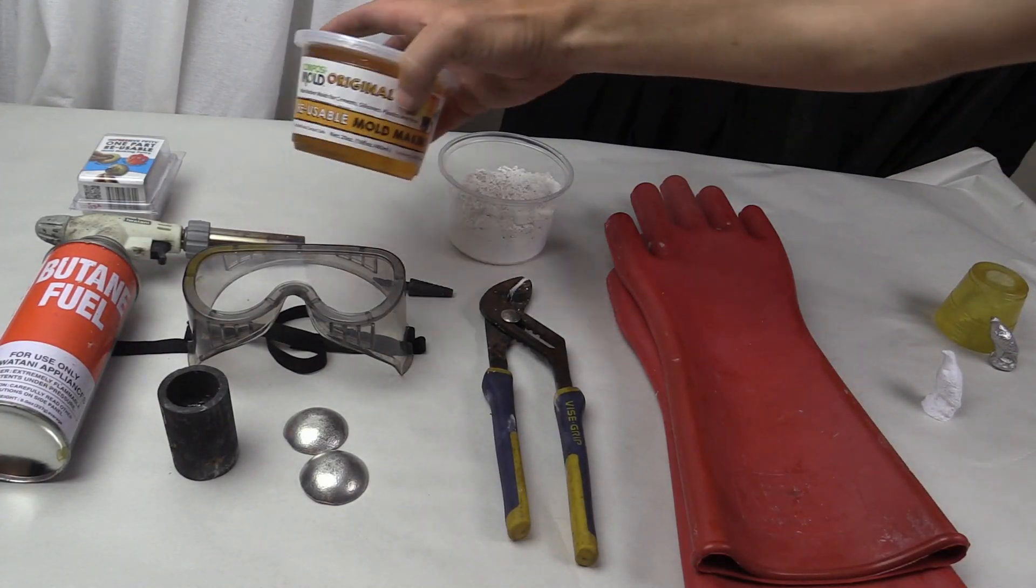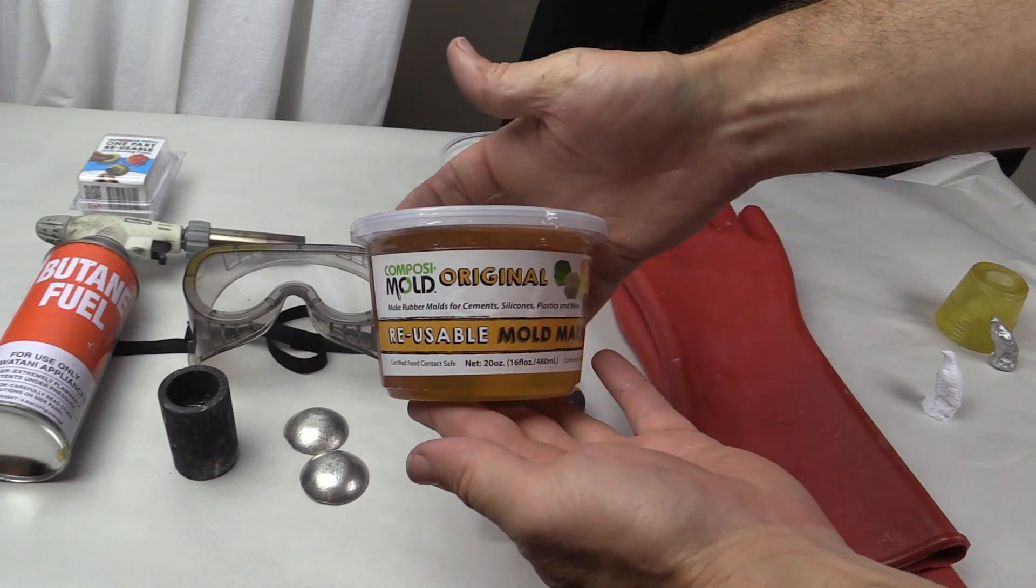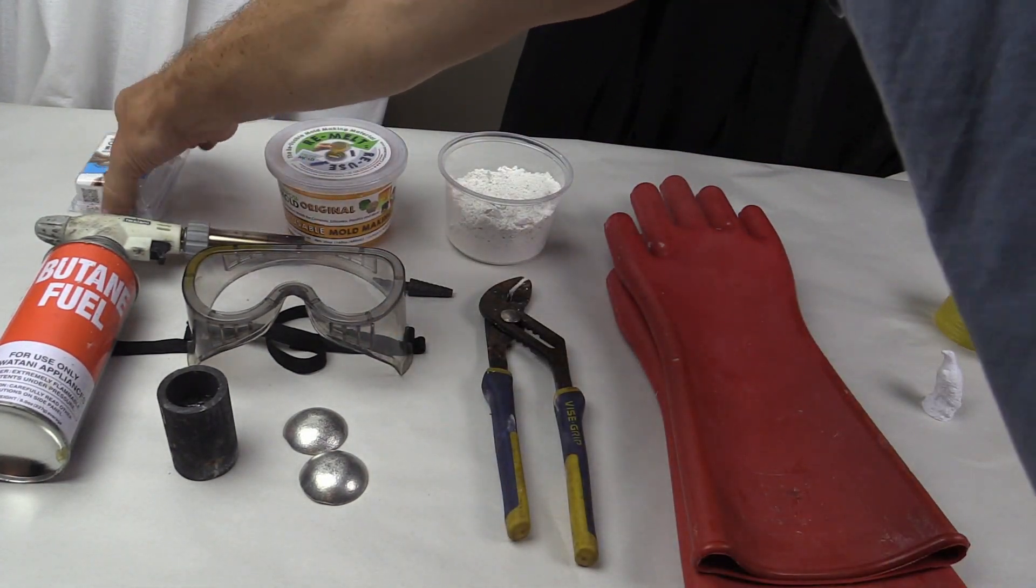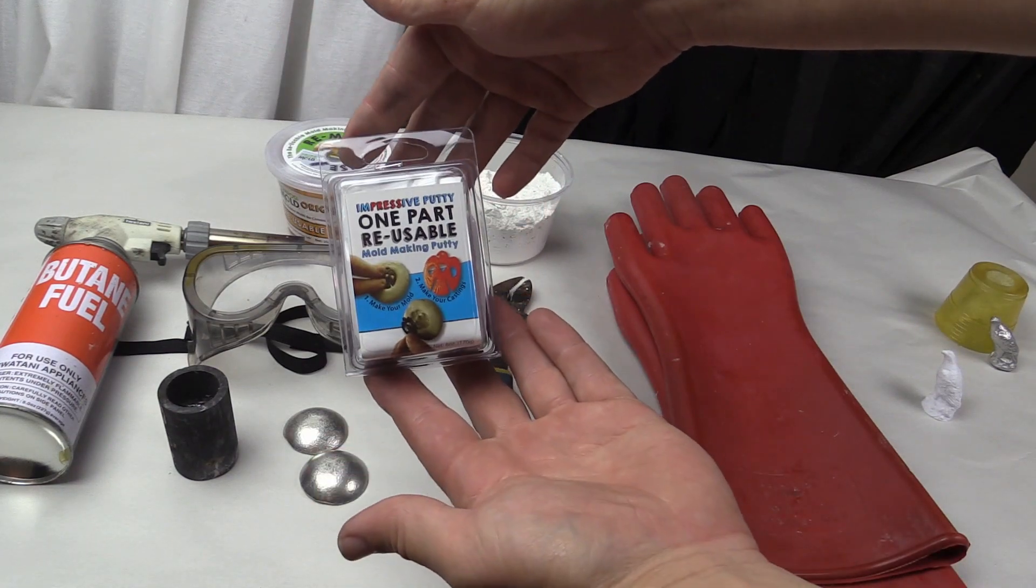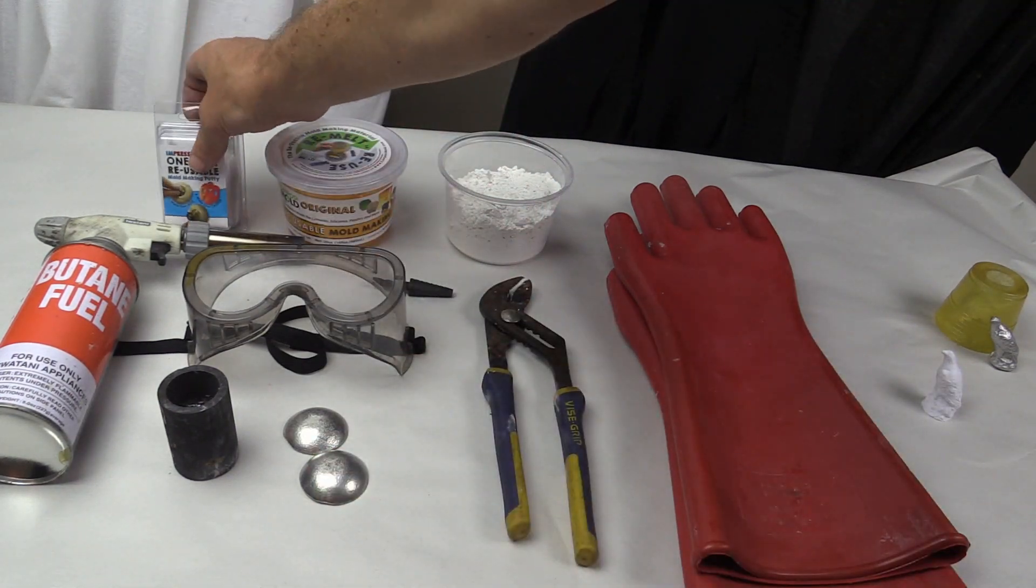You will need your mold making materials either ComposiMold or Impressive Putty. We will first show you the ComposiMold but at the end of this video we will also show you the Impressive Putty. Both are reusable.